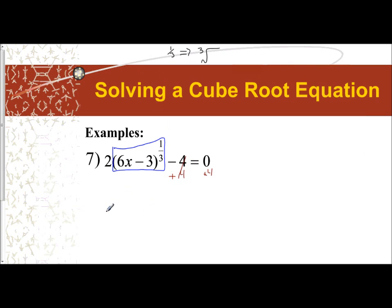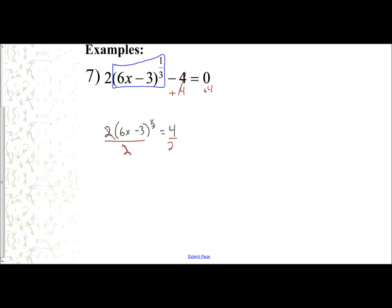And I get twice the quantity 6x minus 3 to the one-third power equals 4. And then I'm going to divide everything by 2 to get rid of the coefficient. And that's going to give me just my object. It's going to give me my 6x minus 3, that entire object being raised to the one-third power equals 4 divided by 2 is 2.